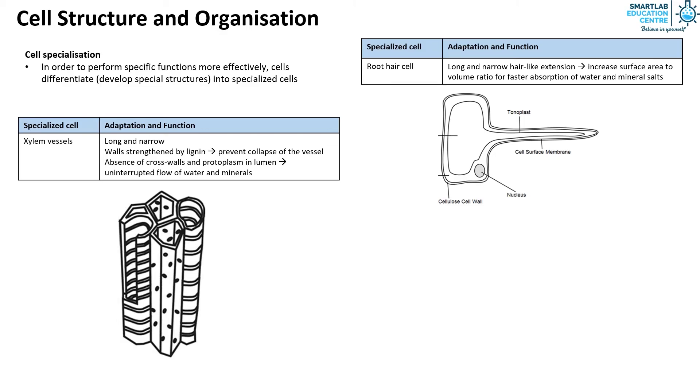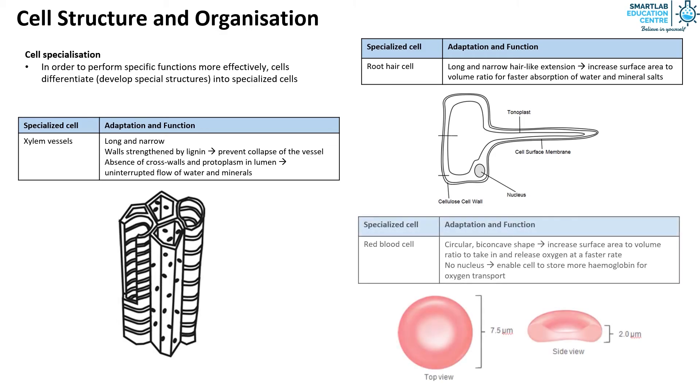Lastly, the red blood cell. It has a circular biconcave shape which increases the surface area to volume ratio to take in and release oxygen at a faster rate. It has no nucleus which enables the cell to store more hemoglobin for oxygen transport.